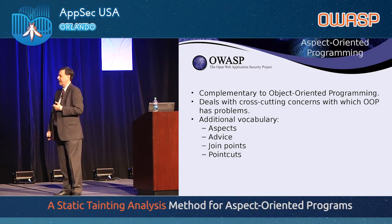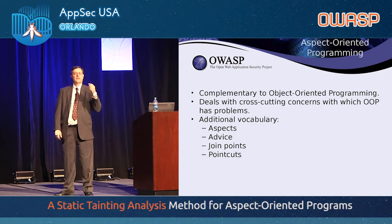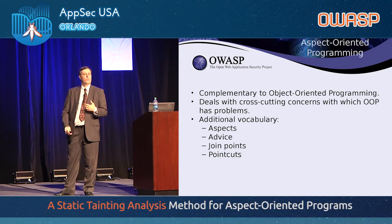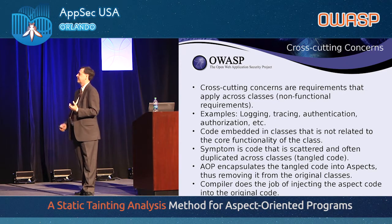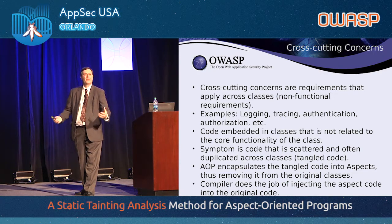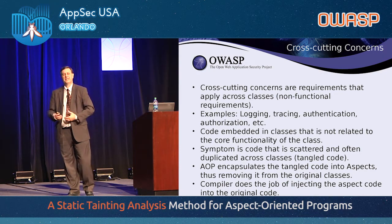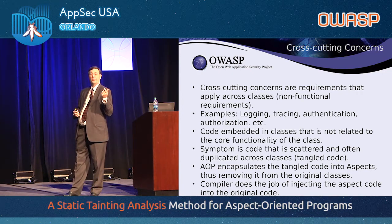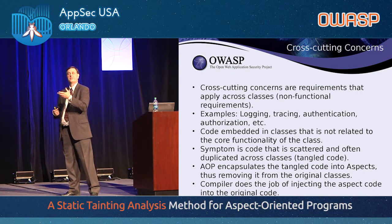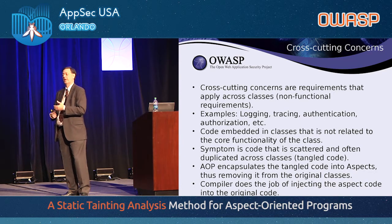It also adds a little bit of vocabulary: aspects, advice, joint points and point cuts. We'll go through each of those one by one so you'll see exactly how they work. I won't be able to tell you everything about them because it's a deep topic and there's whole books written on it. Aspects actually are not new — they've been around since the mid-90s. Aspect-oriented programming concepts have been around a while.